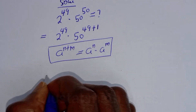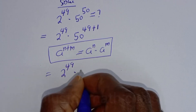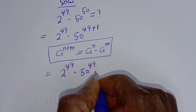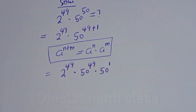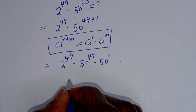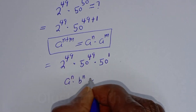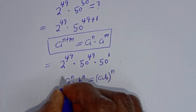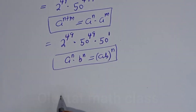So we have 2 raised to power 49 multiplied by 50 raised to power 49 multiplied by 50 raised to power 1. Take note that if you have a raised to power n multiplied by b raised to power n, this is equal to (ab) to the power of n. Then this can be written as...